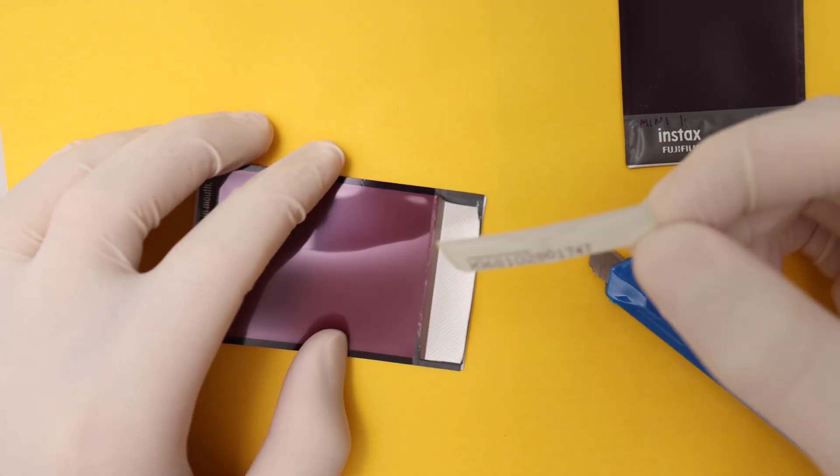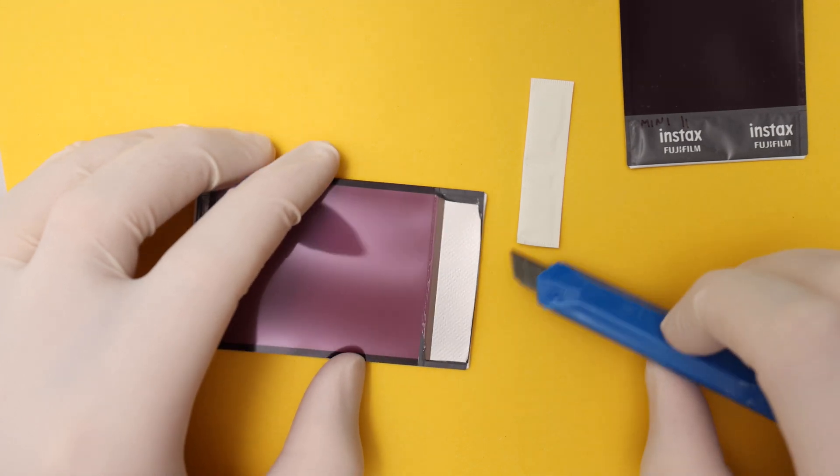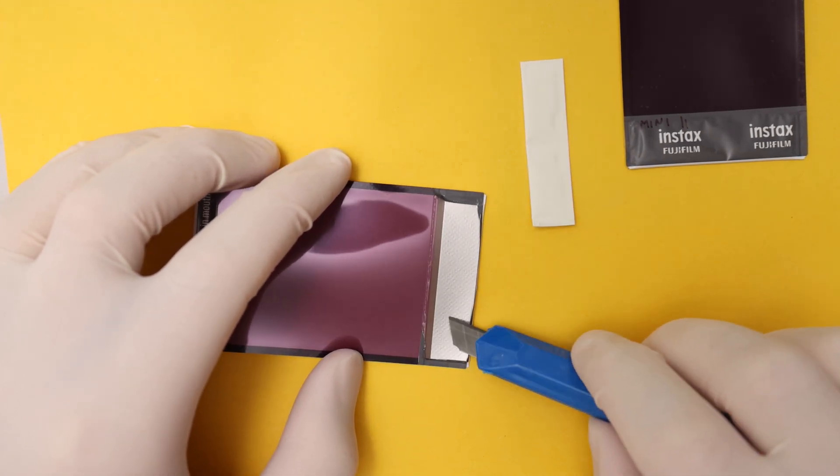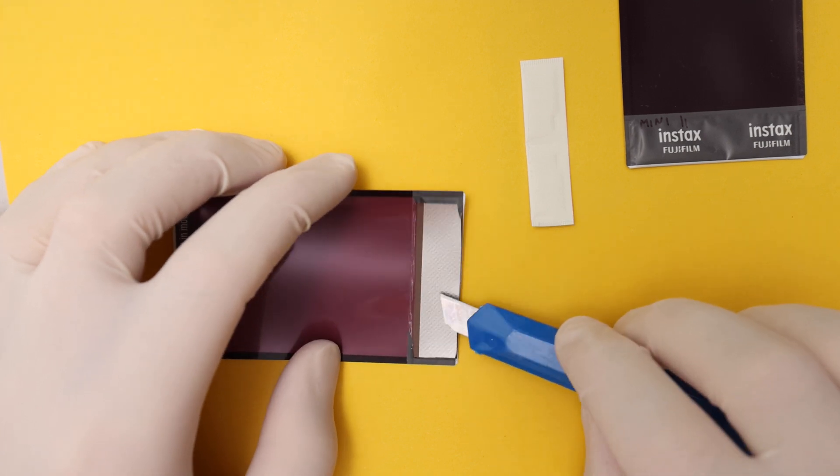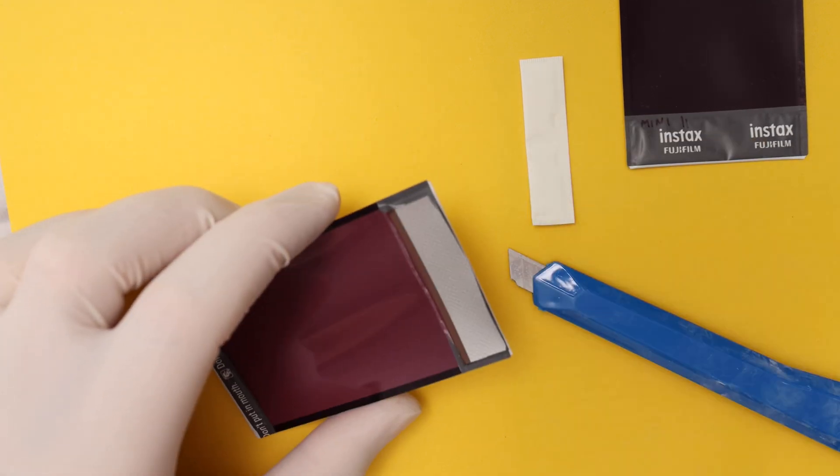So I think all the chemicals are in this pouch - yeah that's what it looks like. And then here it's just again some type of aluminum type of layer, so let's cut into it and see what it looks like.